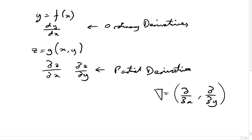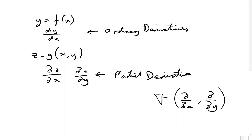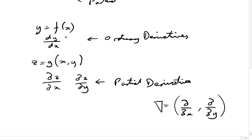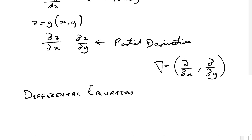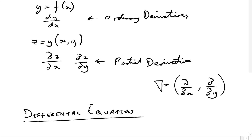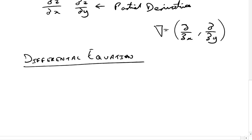Now let's look at the idea of a differential equation. We've got the idea of an ordinary derivative - that's when we've only got two variables going on, y in terms of x. A partial derivative is when we've got z in terms of more than one variable. Now we're going to talk about this thing called a differential equation.